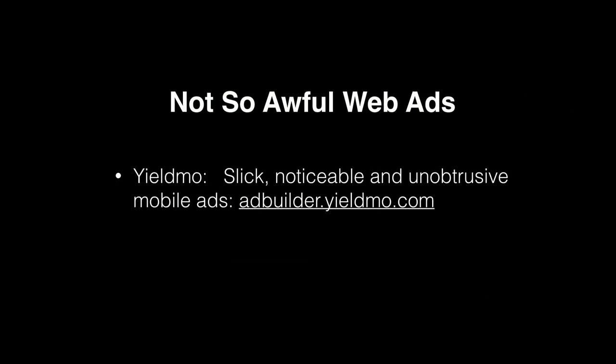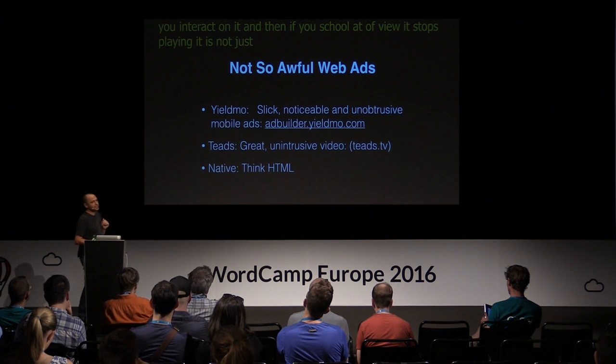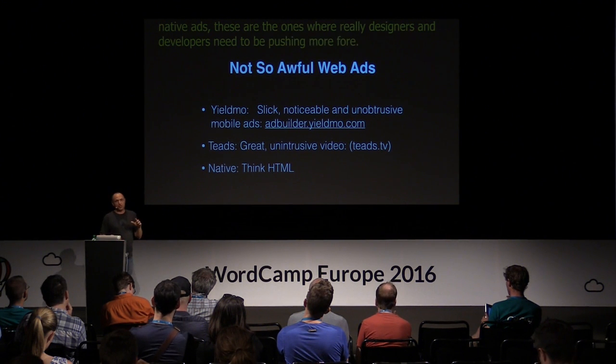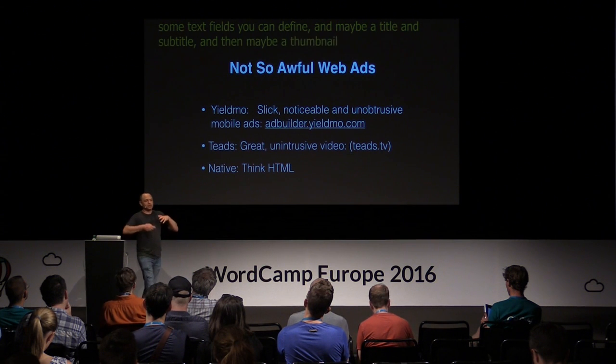I did find a few examples of not-so-awful web ads. Yieldmo makes a really slick, unobtrusive mobile ad format that comes in a lot of different designs. Teads is a really nice video ad format — it autoplays when you scroll into view, doesn't activate sound until you interact with it, and stops playing when you scroll out of view, so it's not consuming bandwidth endlessly. And then native ads — these are ads that consist essentially of text and an image. The advertisers provide some text fields — maybe a title, subtitle, and thumbnail image — and then it's up to you as a designer or developer to decide how and where those ads are displayed on your website.